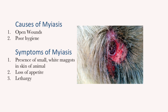The symptoms of myiasis can differ on a case-by-case basis. The most unmistakable indicator of myiasis is the observance of small white maggots in the skin of the animal. In some cases, the fur of the animal may obscure the wound, so maggots may not be spotted. Other symptoms include the loss of appetite and lethargy in the animal.